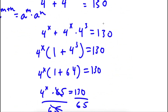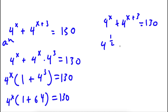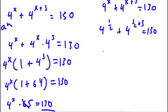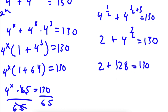Now to check the answer, if I plug in 1.5 — that is, x equals one half — into 4 to the power of x plus 4 to the power of x plus 3 equals 130, I get 4 to the power of 1.5 plus 4 to the power of 4.5 equals 130. 4 to the power of 1.5 is 2, and 4 to the power of 7 over 2 is 128. So 2 plus 128 equals 130, which confirms 130 equals 130.